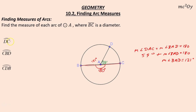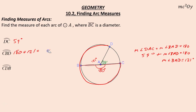Now we can look at our arcs. Arc DC subtends the angle DAC — its central angle is DAC — so it's congruent to DAC, meaning it's 59 degrees. And arc CBD: going from C to B to D, that is 180 plus 121, or 301 degrees. You could also do that as 360 minus 59, which is also 301 degrees.